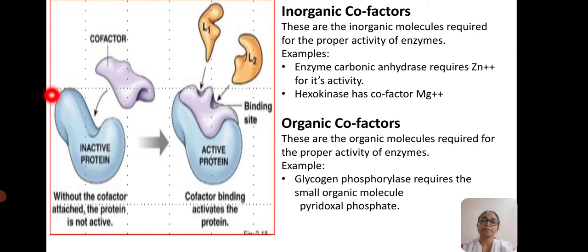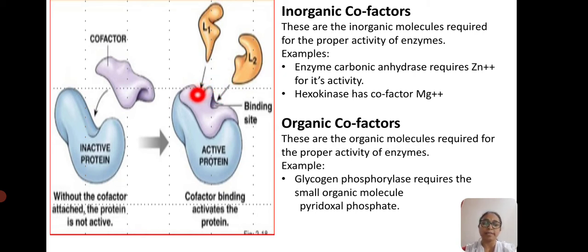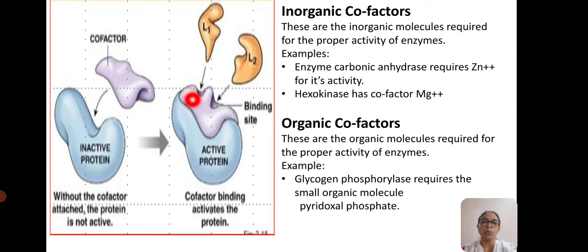Inorganic cofactors are metallic ions required for the proper activity of the enzymes. For example, carbonic anhydrase requires zinc (Zn²⁺) ions for its activity. Similarly, hexokinase is active only when the cofactor magnesium ions are added to it.